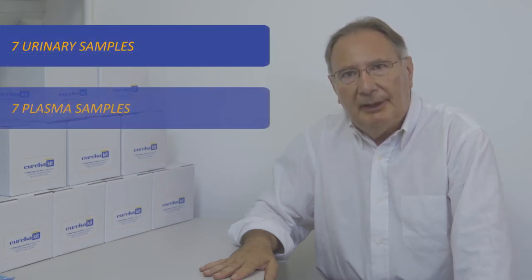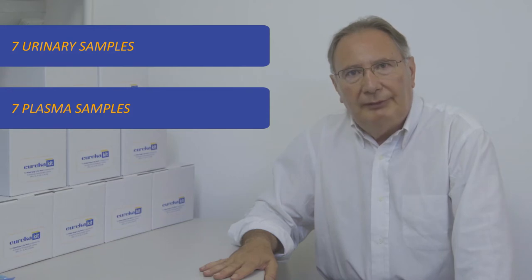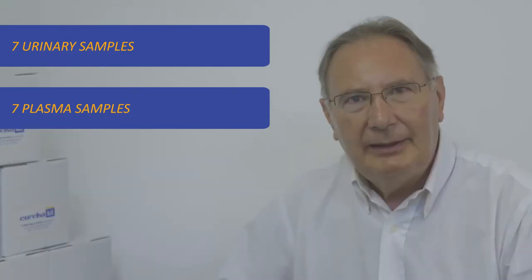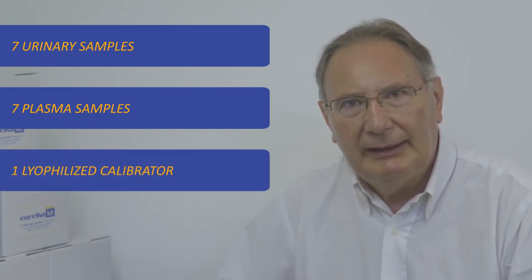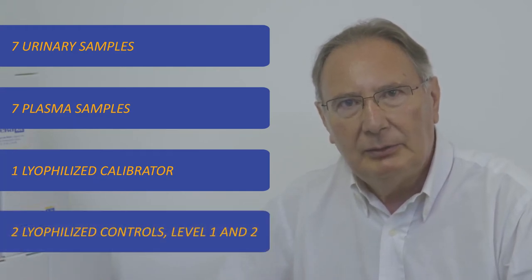Let's take as an example an analytical session of seven urine samples and seven plasma samples on which to perform the catecholamine dosage. Together with these samples we will also analyze one lyophilized calibrator with a known concentration that will be used to automatically plot on the software the calibration curve and two lyophilized controls of level one and two that will be used to check the accuracy of the calibration curve and therefore of the whole analytical session.